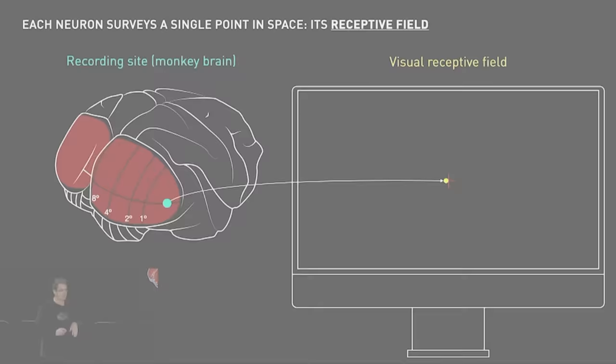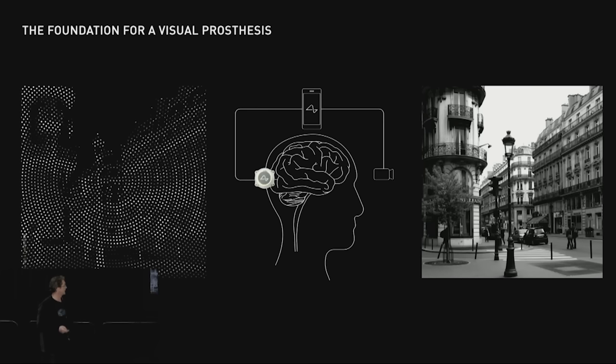This is a schematic of what a visual prosthesis using our N1 device might look like. A camera, the output from a camera, would be processed by an iPhone, for example, which would then stream the data to the device, and the image would be converted into a pattern of stimulation of the electrodes into visual cortex. With a thousand electrodes, we might be able to produce an image resembling something that you see there on the right.